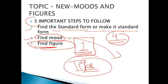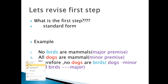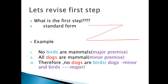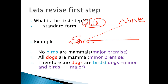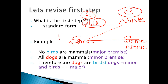I hope first step आपको clear हो गया. Standard form में convert करना है — यह दूसरा step होता है mood को find करना. Mood को find out करते हैं: अगर syllogisms किया हो तो आपको पता होगा — यहाँ होता है 'all' (A), 'none' (E), 'some' (I), 'some not' (O). ये चार vowels — A, E, I, O — आपको याद करने हैं.